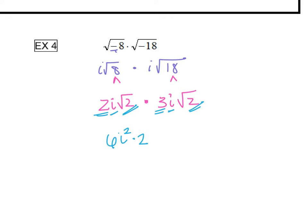Alright, this i squared we know is negative 1. So we have 6 times negative 1 times 2, which gives us negative 12.